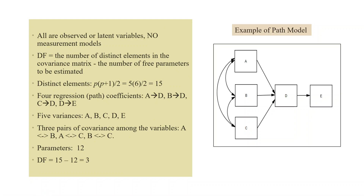Let us calculate the degree of freedom for a path model with 5 variables. The distinct elements = 5 × 6 / 2 = 15 knowns. The unknowns include: 4 regression coefficients (a→d, b→d, c→d), 5 variances (a, b, c, d, e), and 3 covariances (a-b, a-c, b-c) — totaling 12 unknowns. Therefore, the degree of freedom = 15 minus 12 = 3.